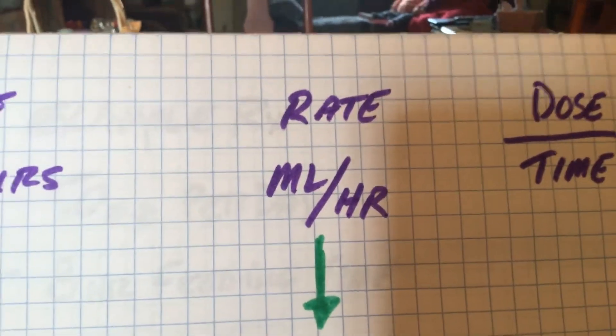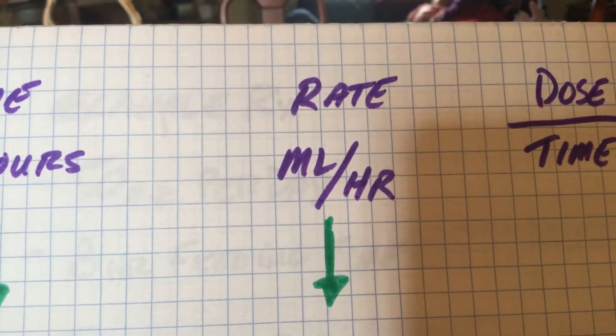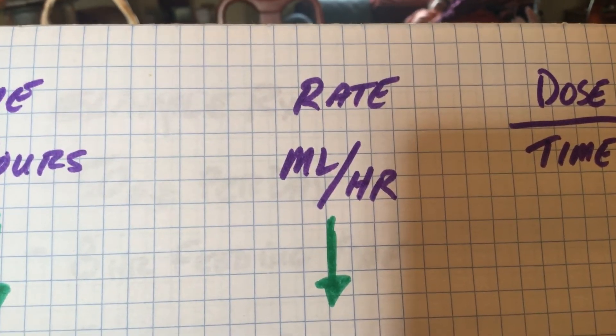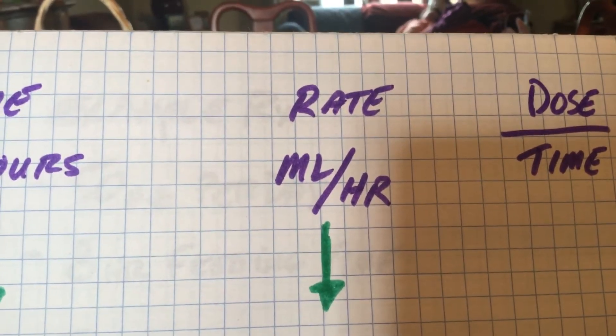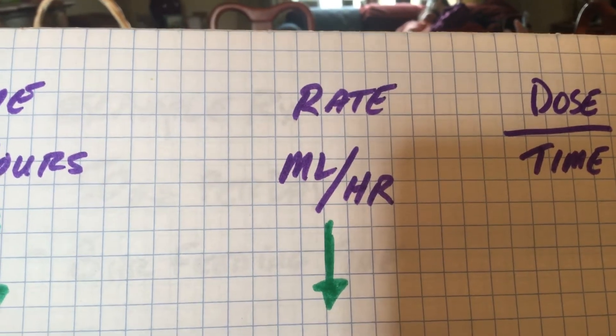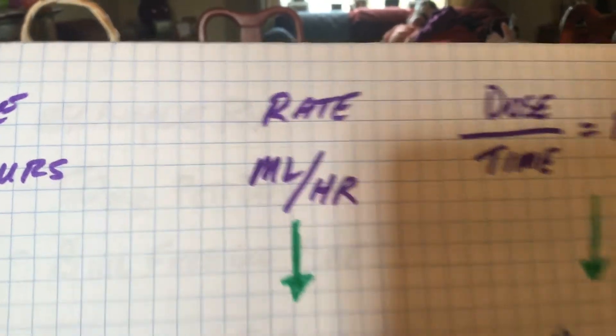Now we're ready to go over and look at our rate. Rate is given in milliliters per hour. So that means the milliliters is in the numerator and the hours is in the denominator, milliliters per hour, just like miles per hour.